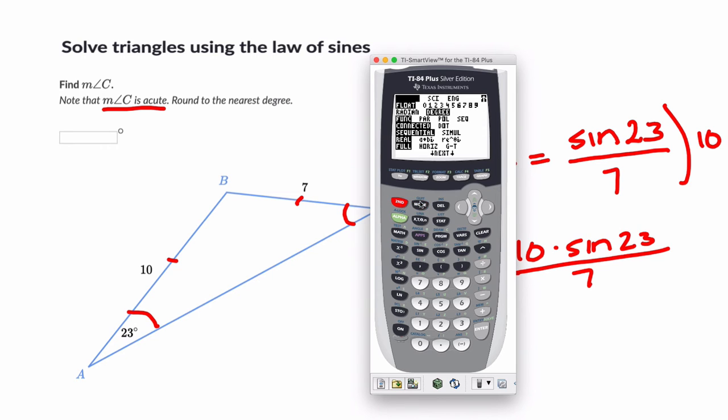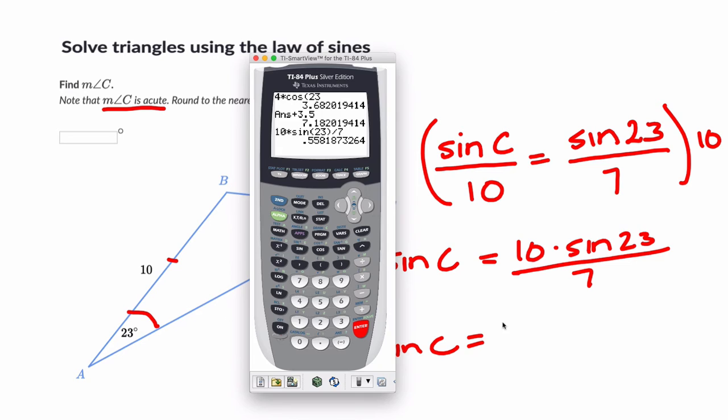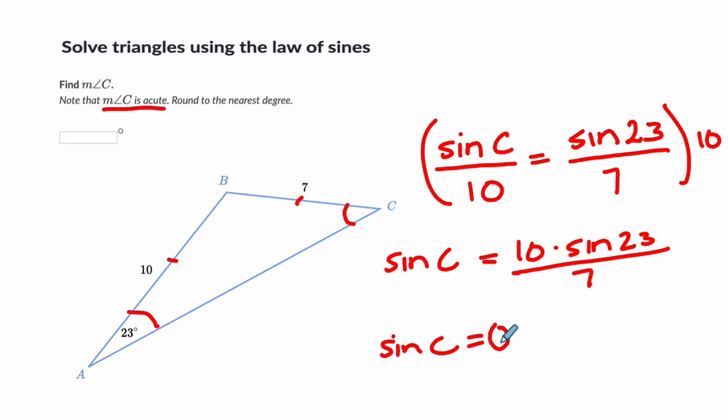We're going to go to mode to make sure we're in degrees here. Okay, we're in degrees. Quit out of that. Hit enter. I get 0.558. Now in my notes, I'm just going to write 0.558, right? But that's an approximation. So I put these squiggly lines here. It's about that.